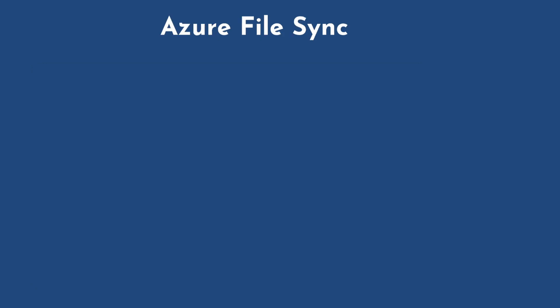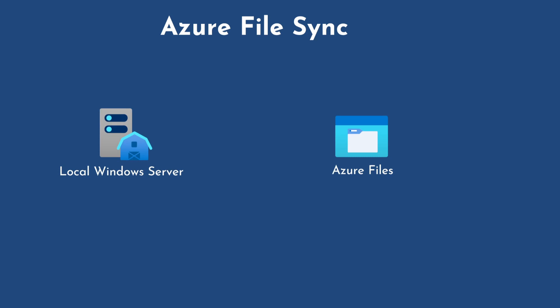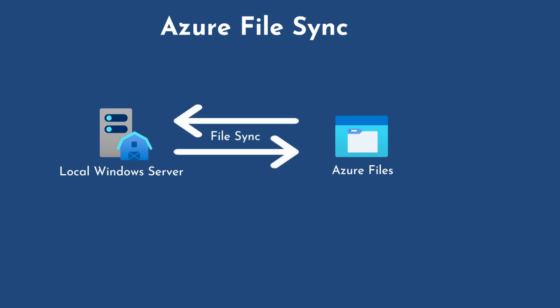Then we have Azure File Sync. We use Azure File Sync when we need to synchronize files between your local Windows Server and Azure Files in the Azure storage account. This sync process is bidirectional — meaning it works both ways. It is used to sync only files, not blobs or any other data type, just files from your local Windows Server to Azure Files. You install the Azure File Sync agent on your local Windows Server and then it performs the file sync for you.